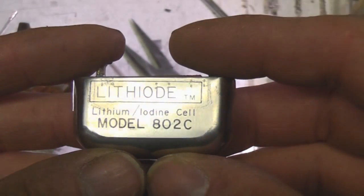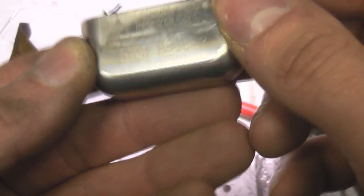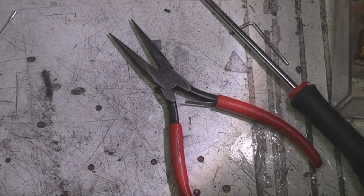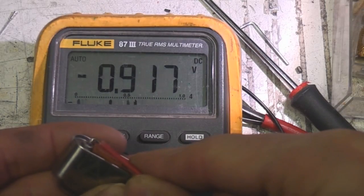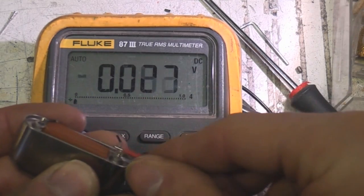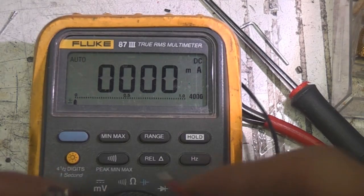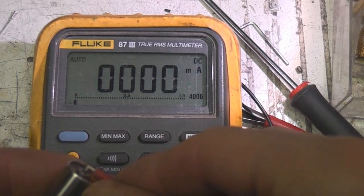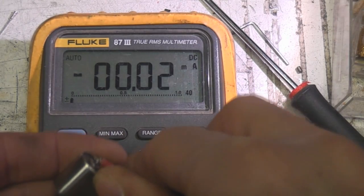This is a lithium iodine cell made by Catalyst Research in Baltimore. Let's see if it's got any life left in it. 2.7 volts with a short circuit current of pretty much nothing, so I think that's completely dead.